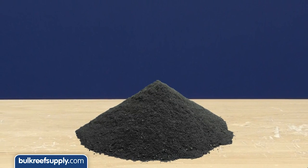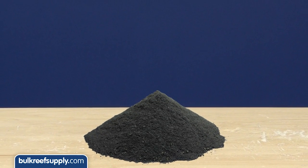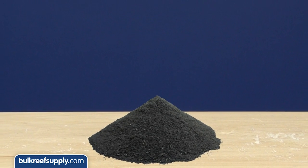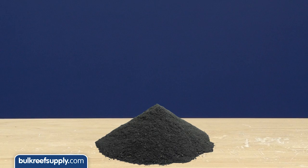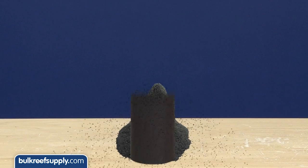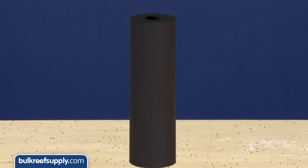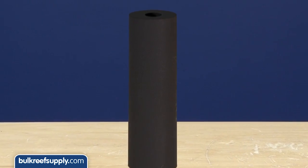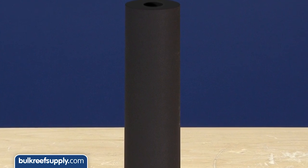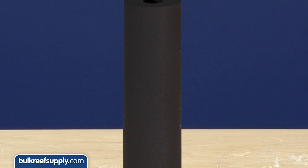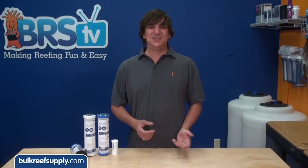Carbon blocks are activated carbon which has been powdered to maximize available surface area, combined with a binder and extruded into a cylindrical tube. These tubes are cartridges that eliminate channeling and are very effective at increasing contact time between the water and the carbon's internal pore network.